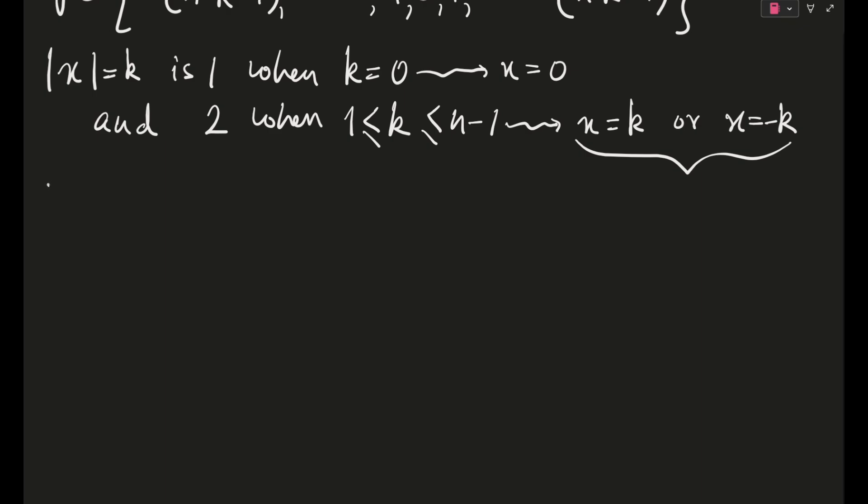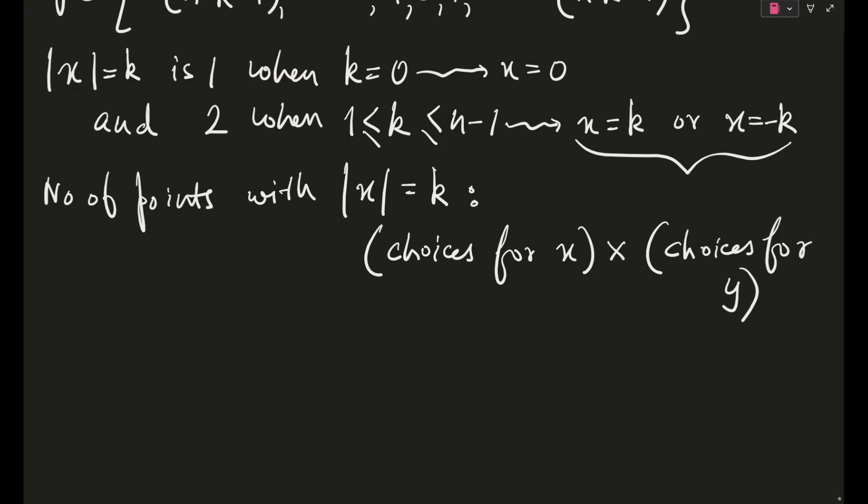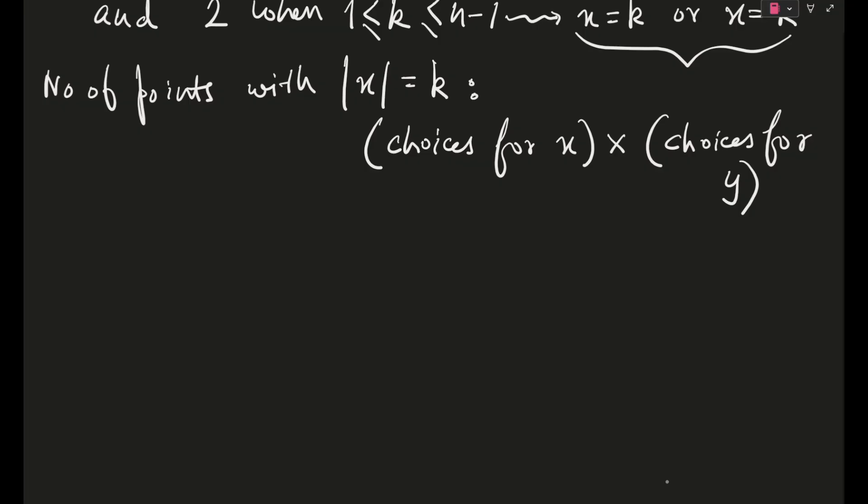Right now if I try to write the number of points with |x| = k, then the expression for that would actually be: number of choices for x multiplied by your number of choices for y. Very common sense, like I hope you can understand this part. So this will actually be the formula of D(n), right? The number of points is what we are supposed to find.